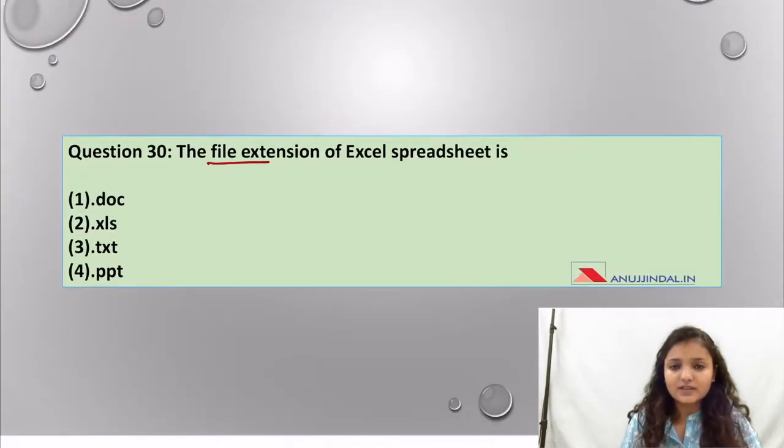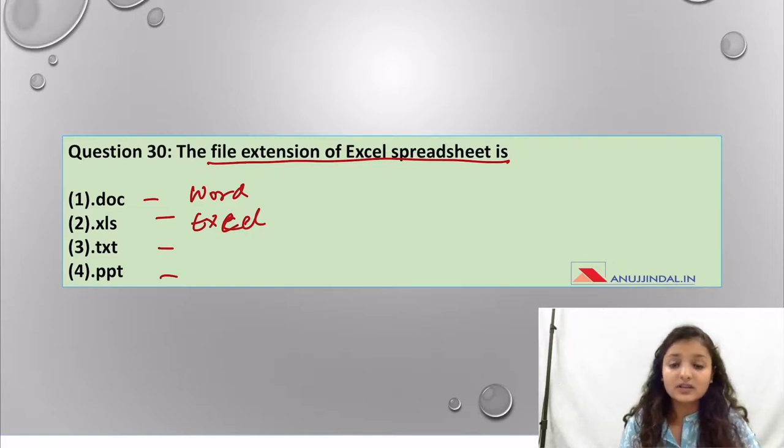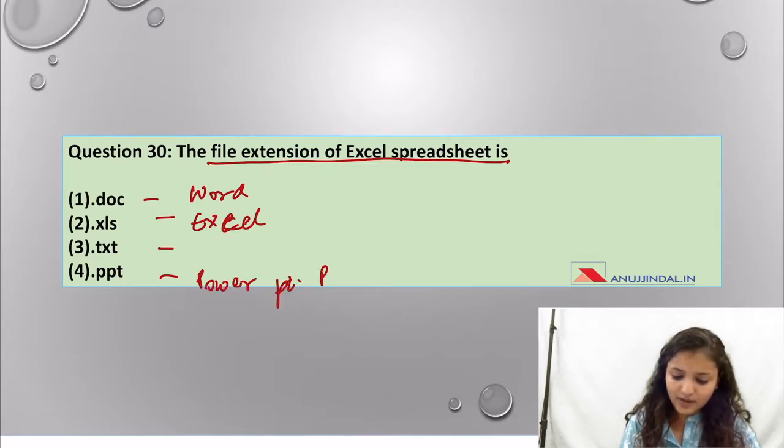The last question of this section: the file extension of Excel spreadsheet. Doc is the Word document, xls is the Excel worksheet, txt is the unformatted version of Word document, ppt is PowerPoint presentations. The answer will be option number two, xls.